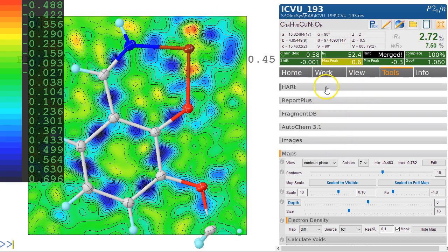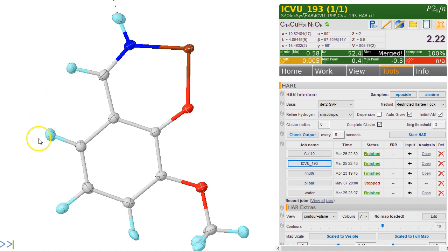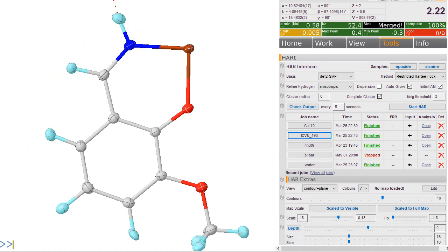This is a structure I have run the Hirschfeld atom refinement on. If you go over to Hirschfeld atom refinement and load the result, first of all, the hydrogen atoms have all been modeled anisotropically and refined freely.